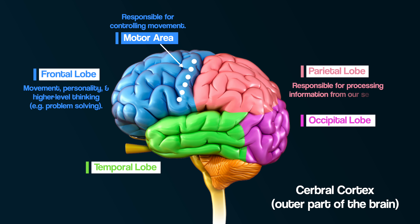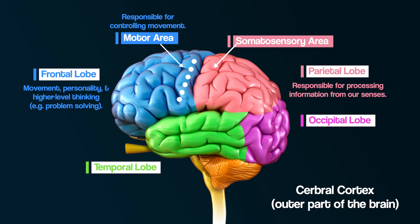The parietal lobe is thought to be involved with your senses, such as touch and pressure, taste, and body awareness. It is home to the brain's primary sensory area, a region where the brain interprets information from other areas of the body. The somatosensory area is located here, behind the motor area — soma meaning body and sensory meaning senses. There is an important line between these two areas called the central sulcus, which separates the frontal and parietal lobes and more specifically the motor area and the somatosensory area.